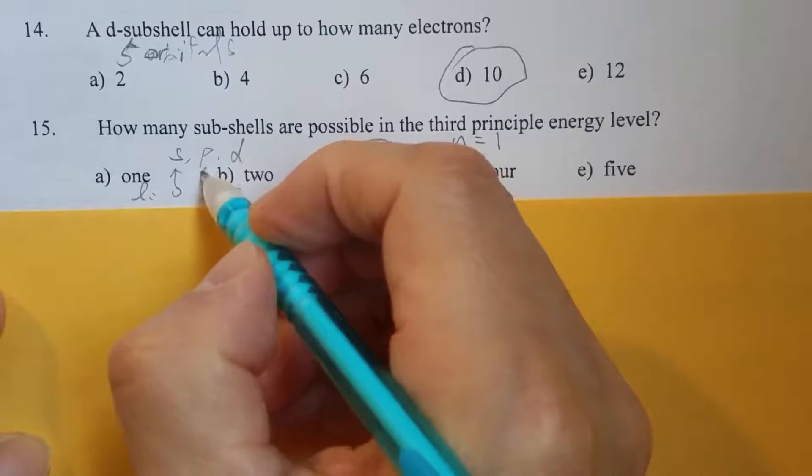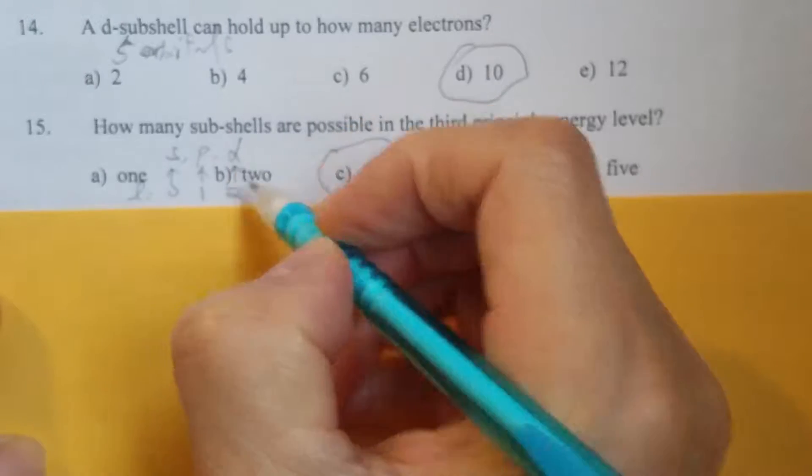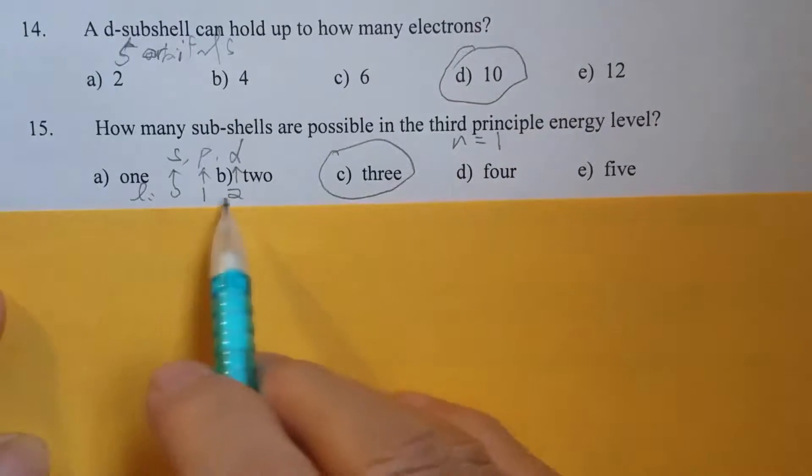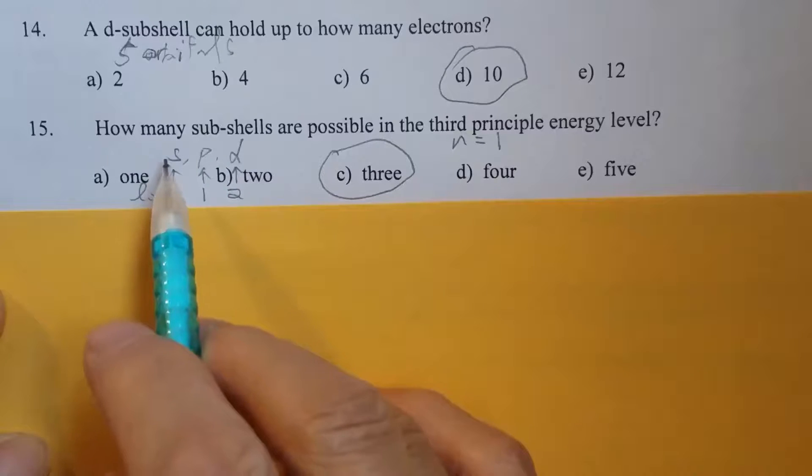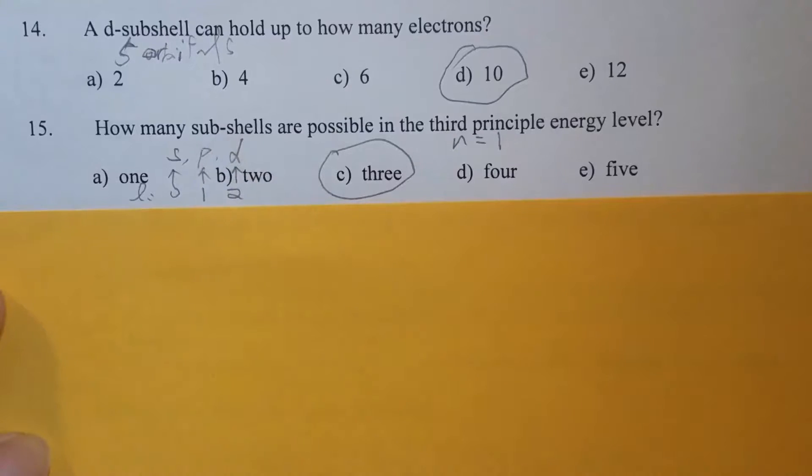And then 0 is s subshell, 1 is p subshell, and l equals 2 is the d subshell. So therefore, we have only one, two, three subshells. That's question number 15.